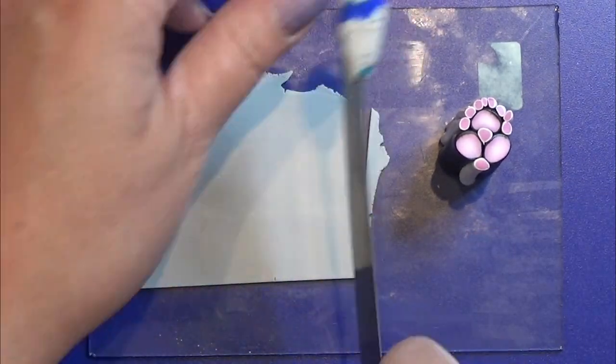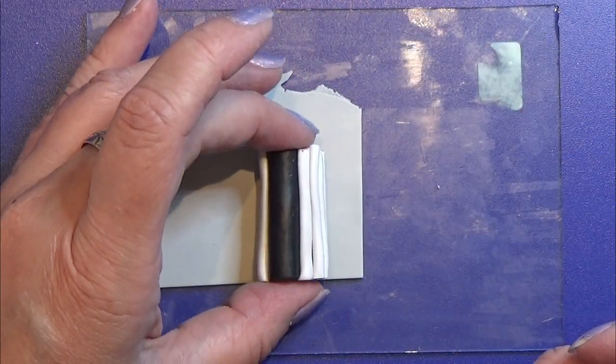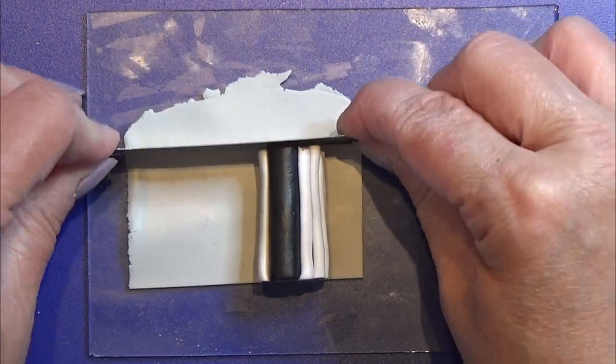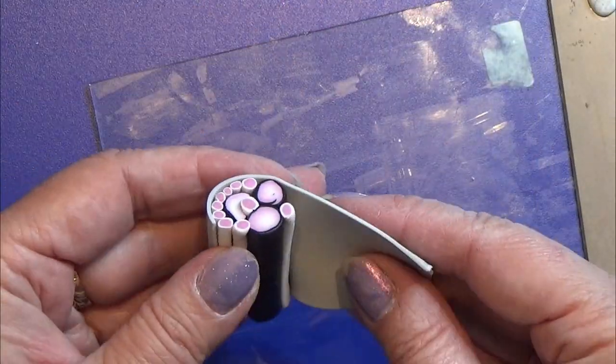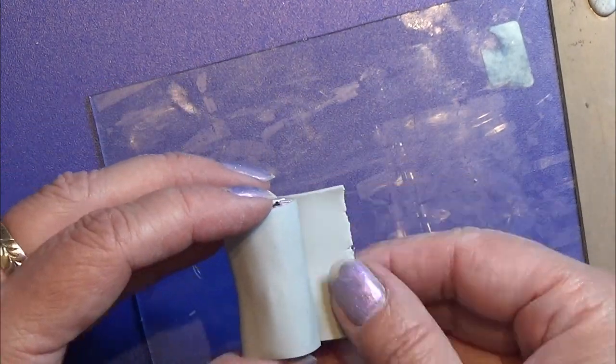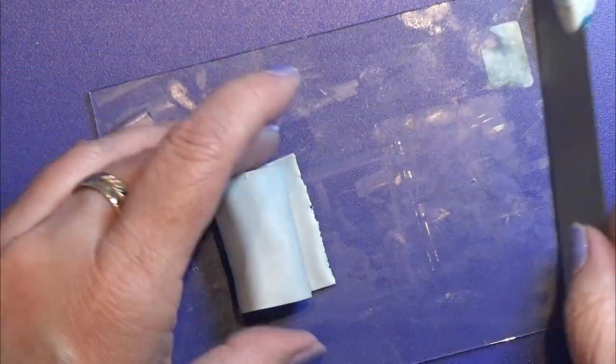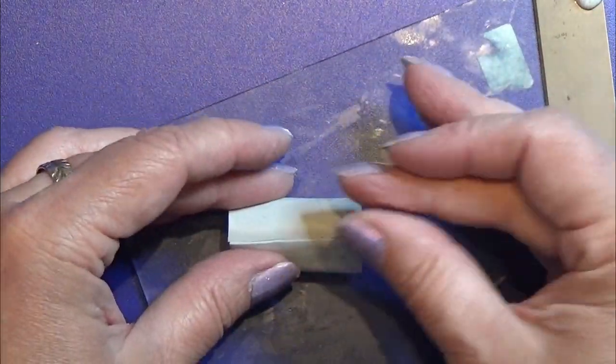I rolled a piece of light grey clay through my pasta machine on one of the smaller settings and I'm going to wrap that around my cane. I'm not going to overlay it, so my cane is going to have this thin grey clay all the way around.